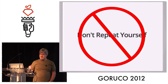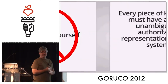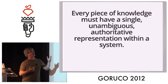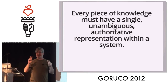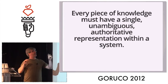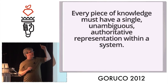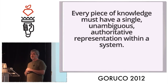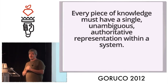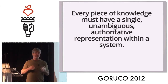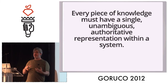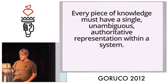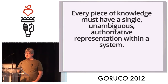What it says is this: every piece of knowledge must have a single, unambiguous, authoritative representation within a system. So this is not just about duplicated code, which is a code smell - which is a different thing from a principle - but we're going to talk about the DRY principle for a minute.